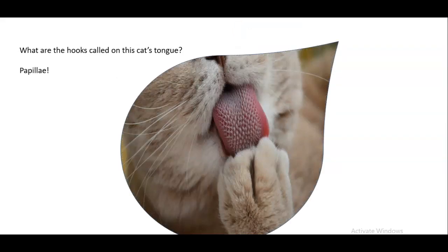Okay looking at this one, what are the hooks called on this cat's tongue? Those are the papilla. So the various papilla they look different with each species and they have different functions. For cats these particular papilla are mainly in there or on there for grooming.